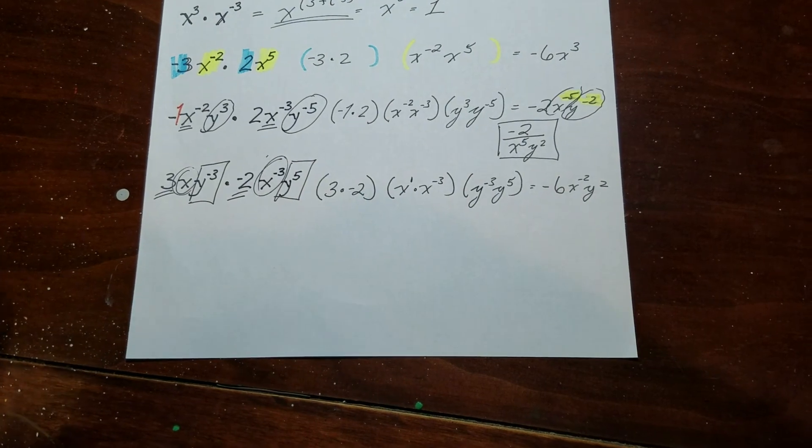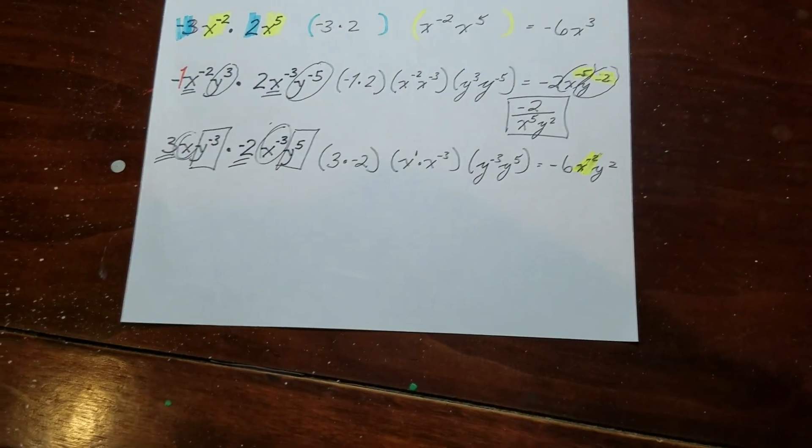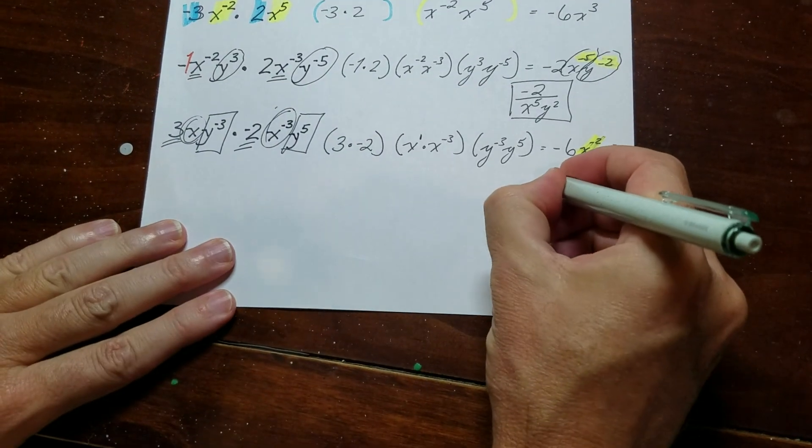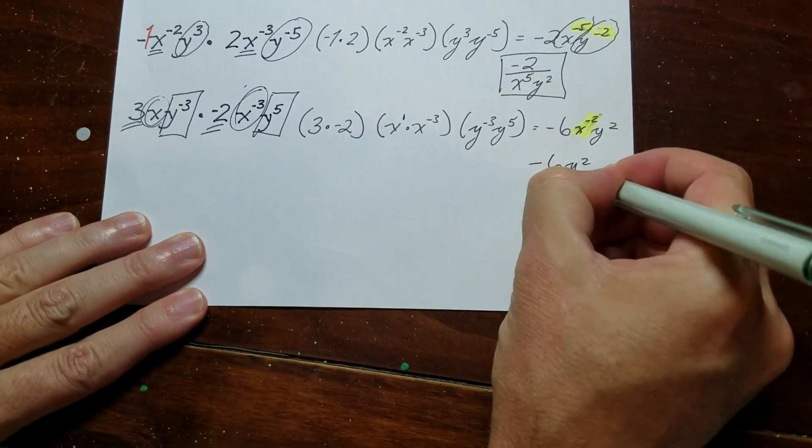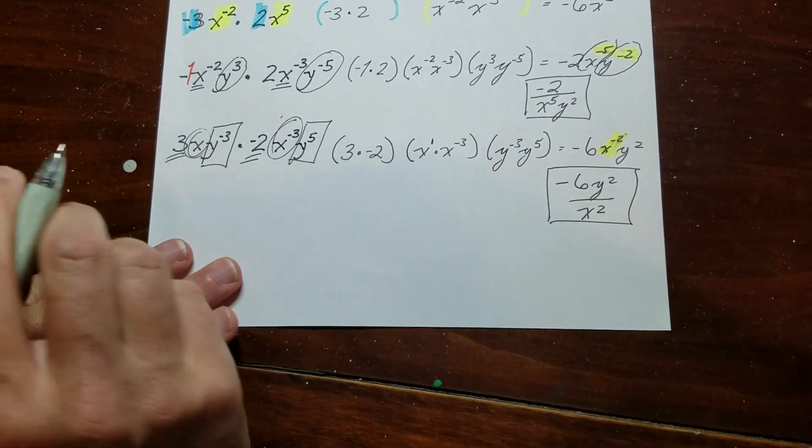So what happens is on this one, it's only this part right here needs to be rewritten. We can't have x to the power of negative 2. So I'm going to leave the 6 up here, I'm going to put the y up here, and then I'm going to go ahead and drop the 2 down here. And that is my final answer.